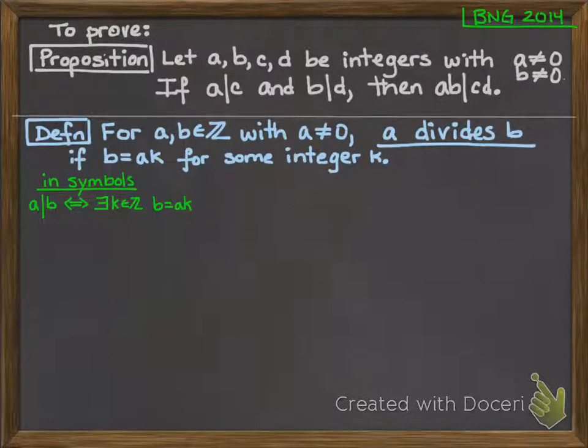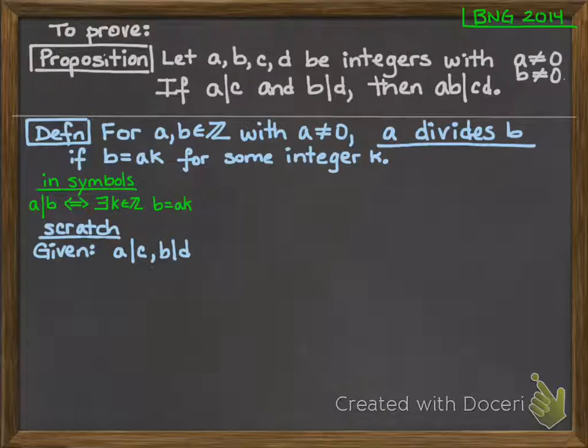So we have the proposition we want to prove, and we have the definition of the terms being used, a divides c and b divides d. And so now what we're going to do is go to our scratch paper. So we're going to want to make a little piece of scratch area. And we'll start by noting what are the given information that we have. So our given information is that a divides c and b divides d. That is the hypothesis. Now what is it that we want to prove? What is the conclusion we're trying to reach? ab divides cd. That is our conclusion. So now we have sort of the skeleton of our proof. In our scratch area, we know that we want to start with a divides c and b divides d and end with ab divides cd.